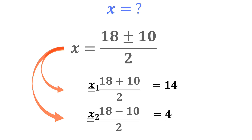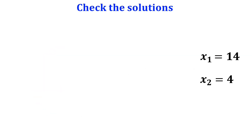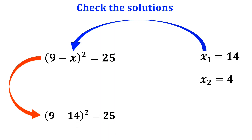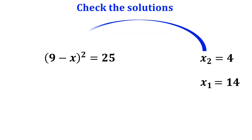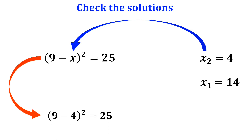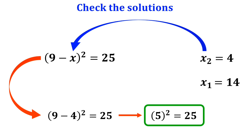Now let's check if the solutions we found are correct. The simplified form of the original equation was 9 minus x, all squared, equals 25. First, we substitute x equals 14: it becomes 9 minus 14, all squared, equals 25, which simplifies to negative 5 squared equals 25. That's great — the first solution is correct. Now substituting x equals 4: it becomes 9 minus 4, all squared, equals 25, which simplifies to 5 squared equals 25. It is proven that the second solution is also correct.